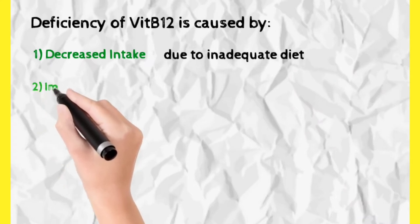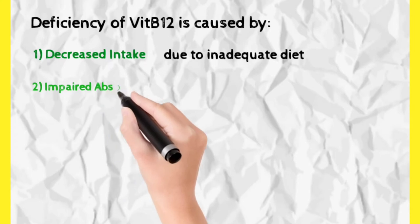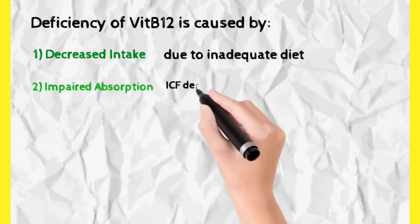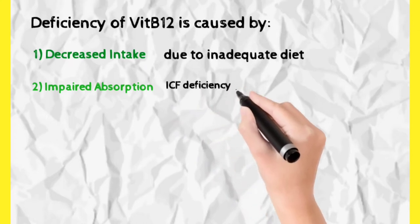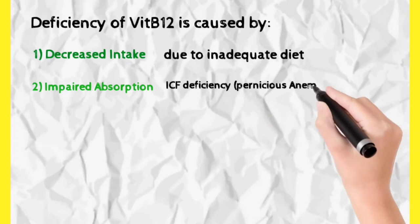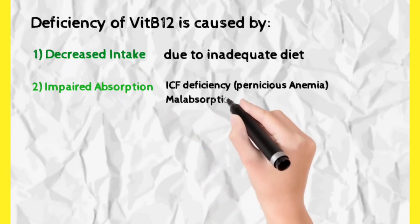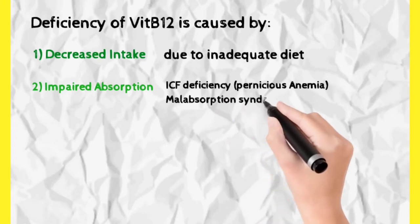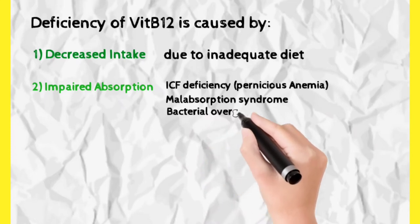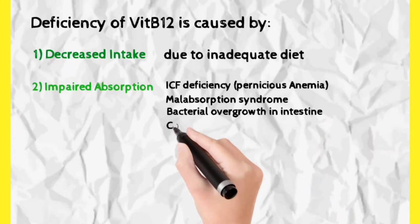The second cause is impaired absorption — we may be eating, but our intestine is not absorbing. Impaired absorption can be because of intrinsic castle factor (ICF) deficiency, which is very important for absorption of vitamin B12. Vitamin B12 deficiency caused by ICF deficiency is known as Pernicious Anemia. Other reasons include malabsorption syndrome, bacterial overgrowth in the intestine utilizing vitamin B12, and competitive parasitic absorption.